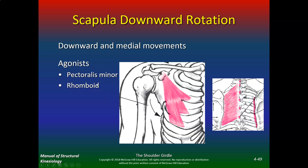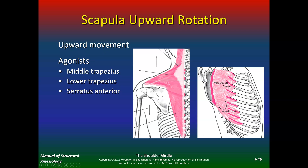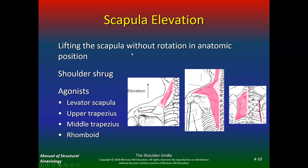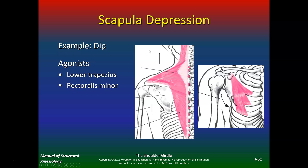Downward rotation is caused by pectoralis minor and rhomboids. If a patient or client can't do upward movement, think about what's weak — middle trap, lower trap, and serratus — and what's tight, such as rhomboids and pec minor. Strengthen weak muscles and stretch tight muscles. Scapular elevation — like a shoulder shrug — uses levator, upper trap, middle trap, and rhomboids. Scapular depression — like a dip — uses lower trap and pec minor.